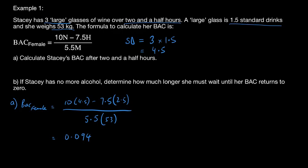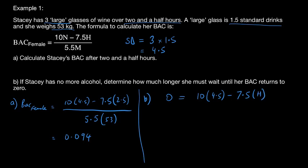For part (b): if Stacy has no more alcohol, determine how much longer she must wait until her BAC returns to zero. We want to find the number of hours. Using the same formula but setting BAC equal to zero: 0 = (10 × 4.5 − 7.5H) ÷ (5.5 × 53), where H is the number of hours we're solving for.